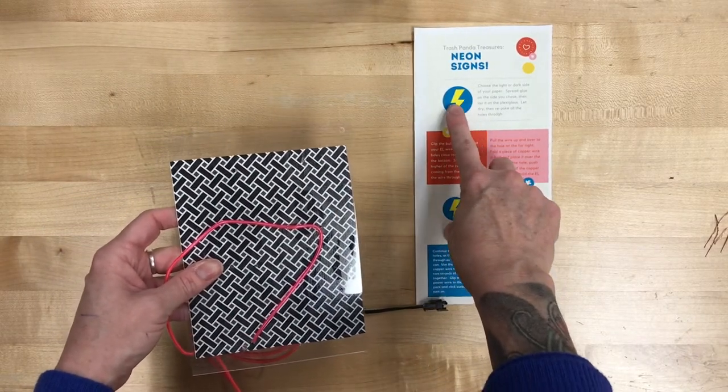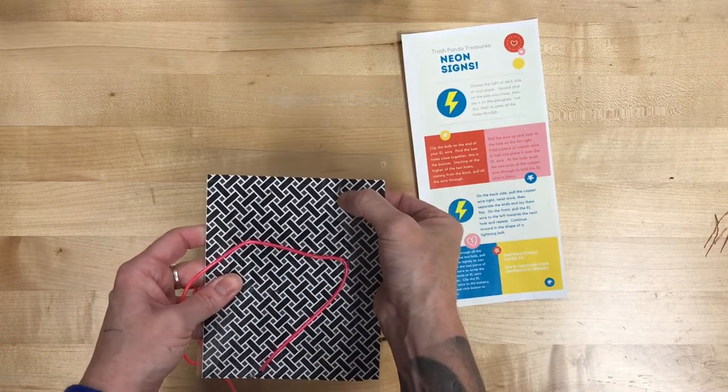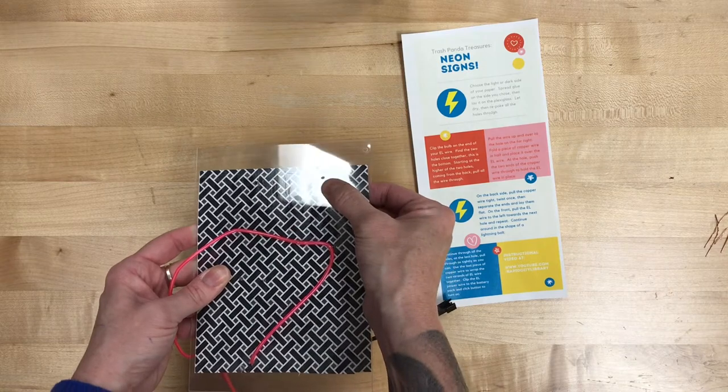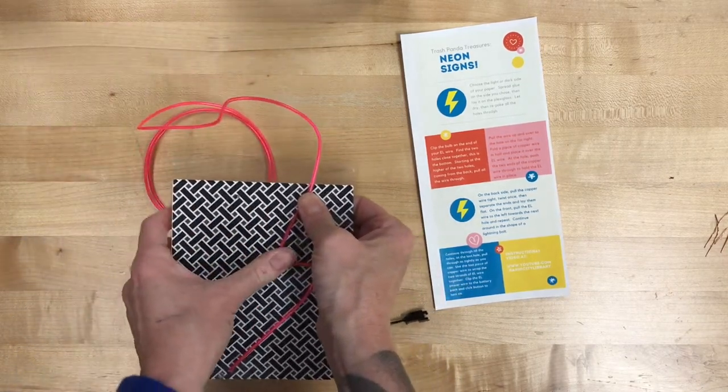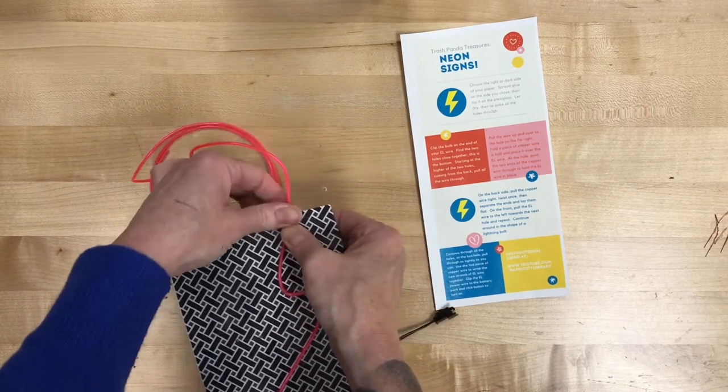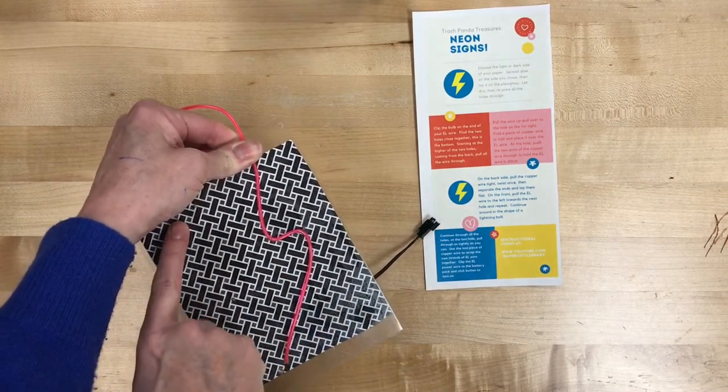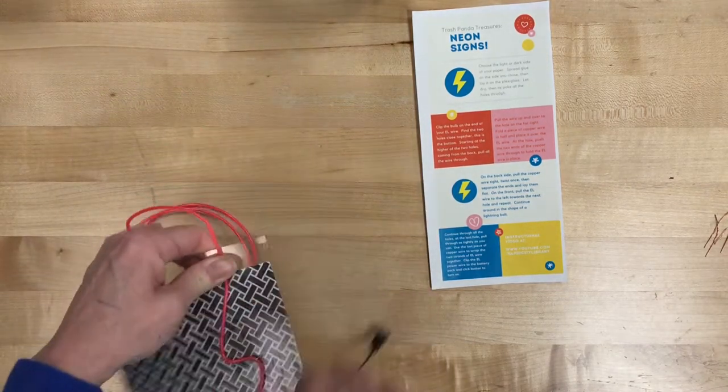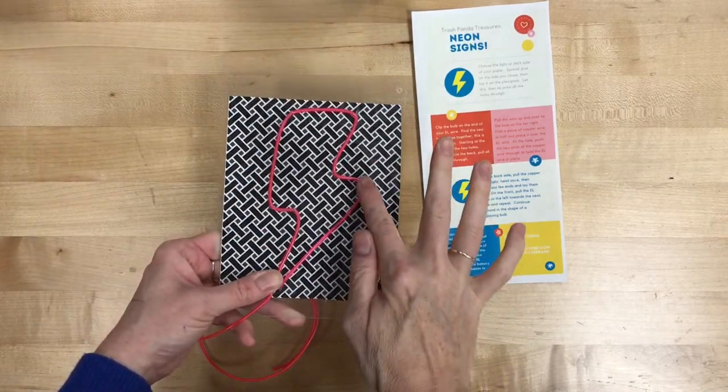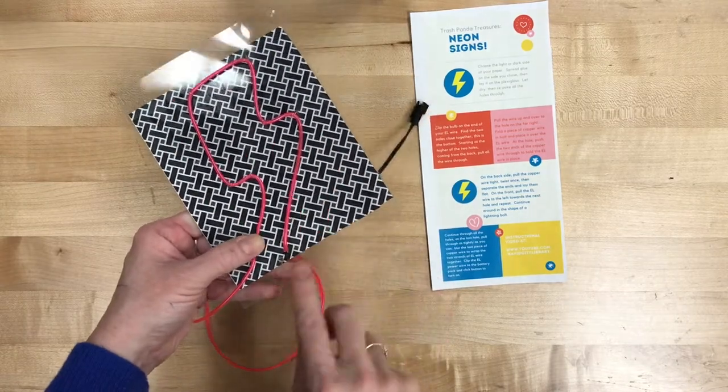And then basically we are going to follow the shape of this. And everywhere that there's a corner on that lightning bolt there should be a hole in your plexiglass. And you just want to again try to make that EL wire lay as flat as it can to get to that hole where we'll use the copper to hold it in place. So we'll go ahead and trace the rest of those shapes.